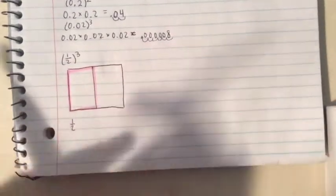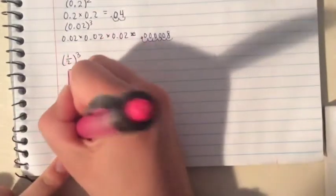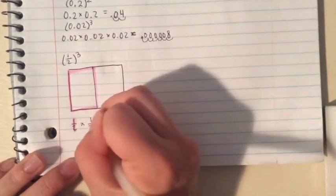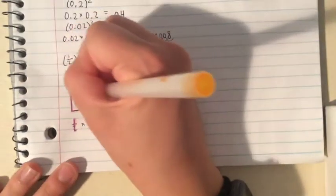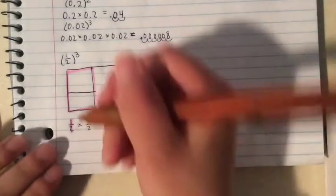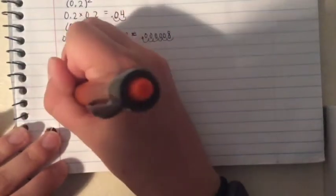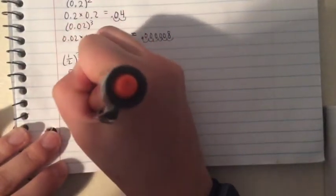This is what you start off with: one-half. When you multiply one-half by one-half the first time, you're taking one-half of one-half, cutting this half again, and you get this orange box right here.